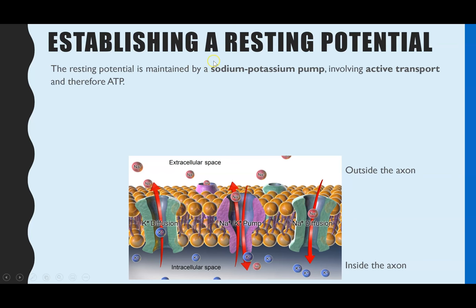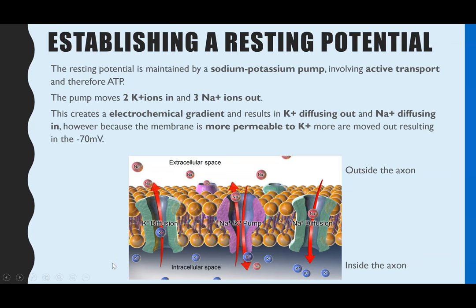The main protein maintaining minus 70 millivolts is the sodium-potassium pump. This is an example of co-transport and active transport, because it's actively transporting ions either side of the membrane. The pump actively transports three sodium ions out of the axon and two potassium ions into the axon. This creates an electrochemical gradient — a build-up of sodium ions on the outside and excess potassium ions on the inside of the axon.